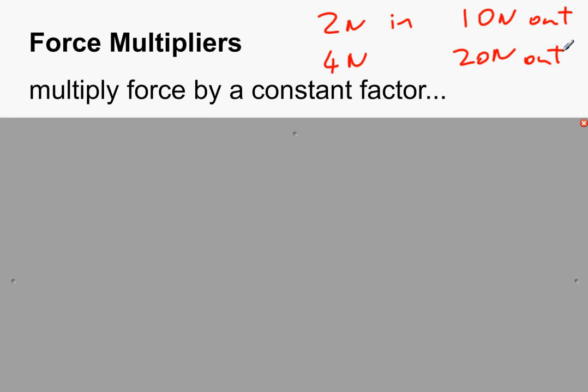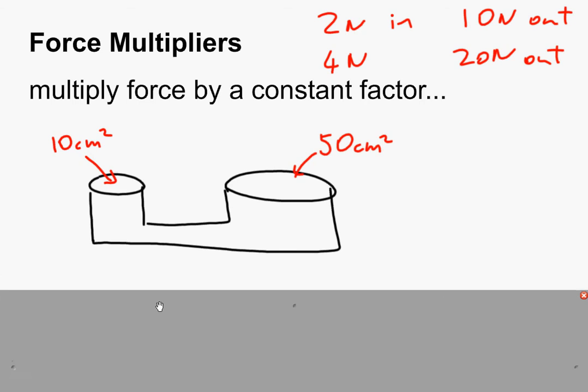So what are some examples of force multipliers? There are tons. You need to know about two in our GCSE, but there are many more. So one example of a force multiplier is a hydraulic system which consists of two pistons that are connected together and filled up with some hydraulic fluid like oil, for example.